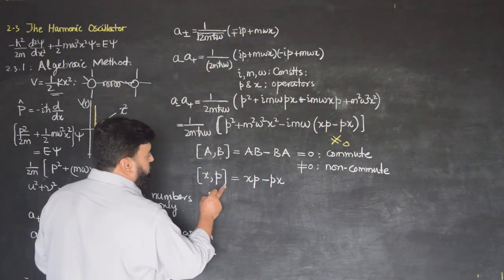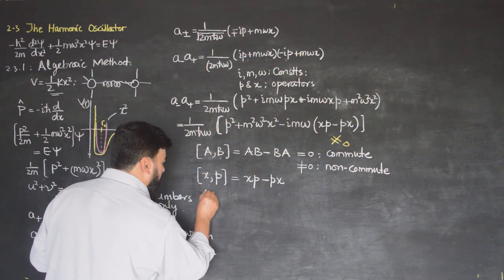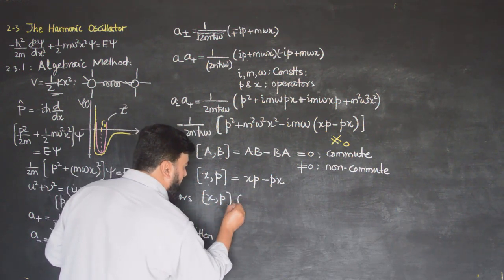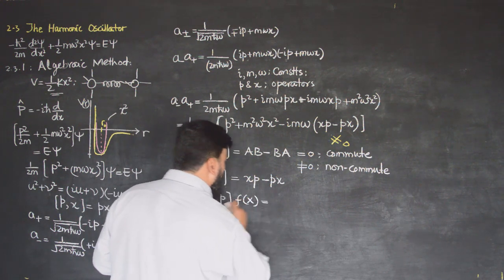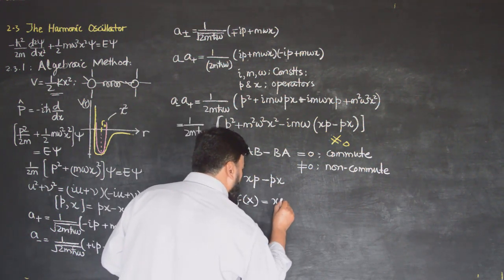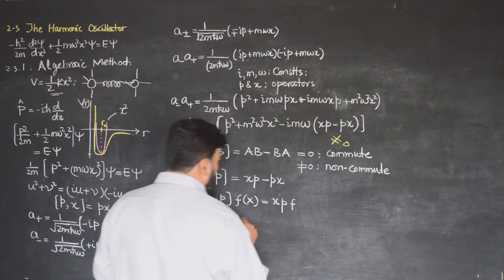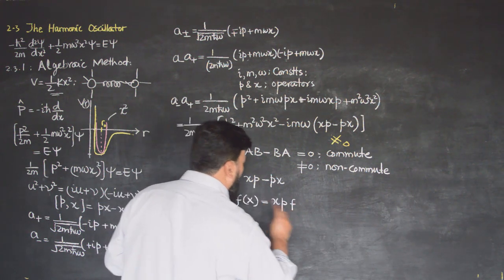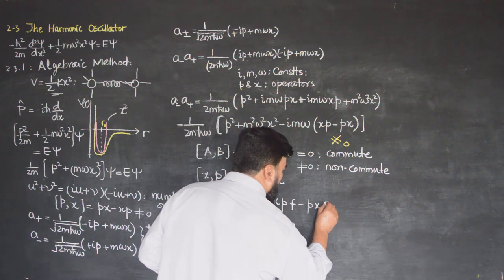To check this, we will apply the commutator [x, p] on a test function f(x). So if I apply [x, p] on a function f(x), I need to evaluate x·p·f minus p·x·f.